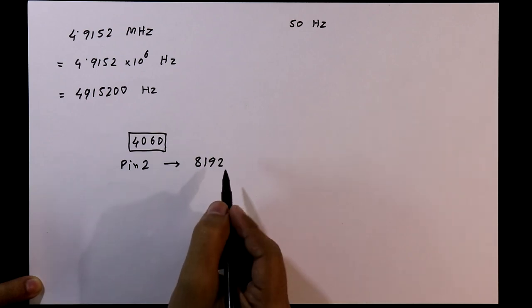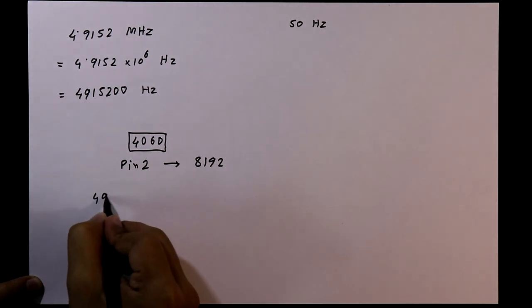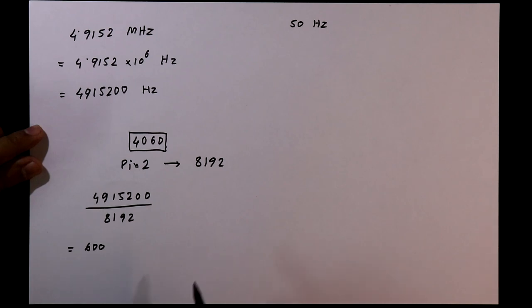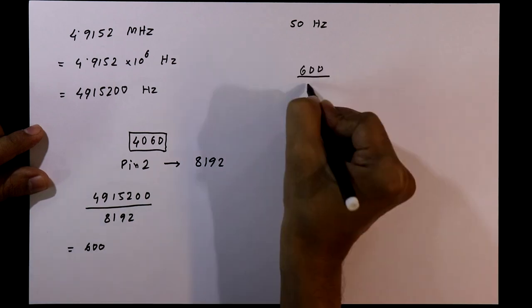So if we divide this number by 8192, then we will get 600. Now to make this 600 to 50, we have to divide this 600 by 12.